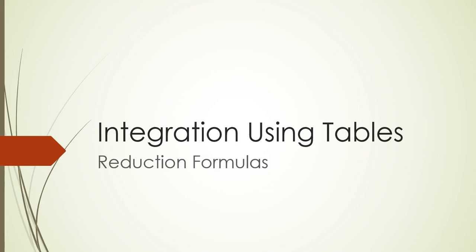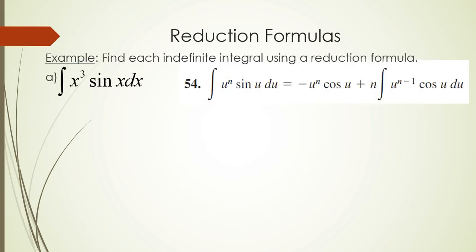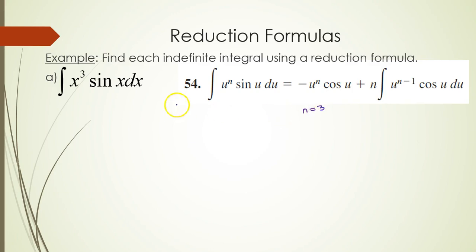In our first example we're going to find the indefinite integral of x cubed sine of x with respect to x. If you look at the form of this integral you'll notice that it closely resembles formula 54 from your table, shown on the screen. We're going to identify what our u and n are. First, n is equal to 3 — that's the power on the x. u, which is always your quantity in terms of x, is just x itself, which means the derivative of u with respect to x is 1.